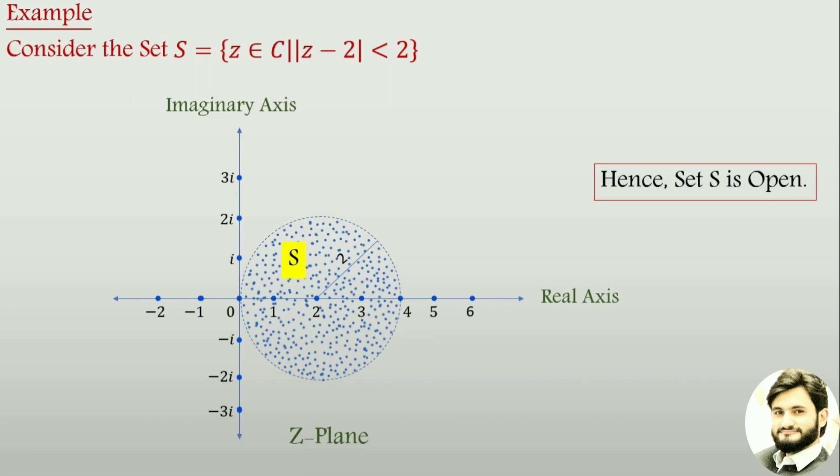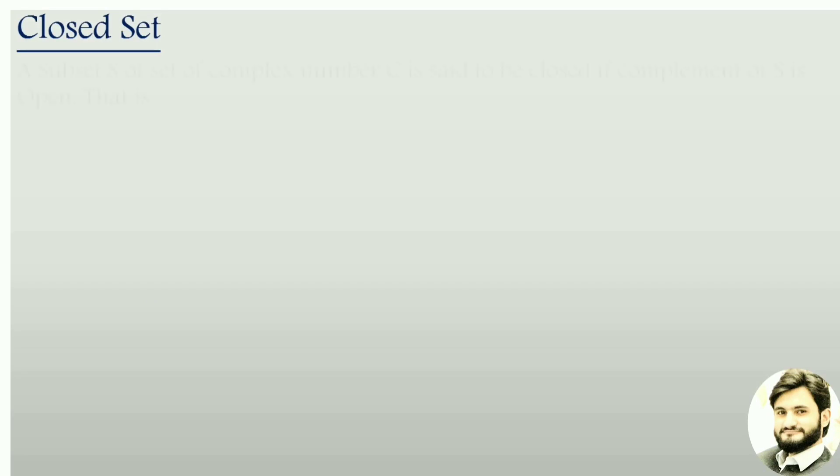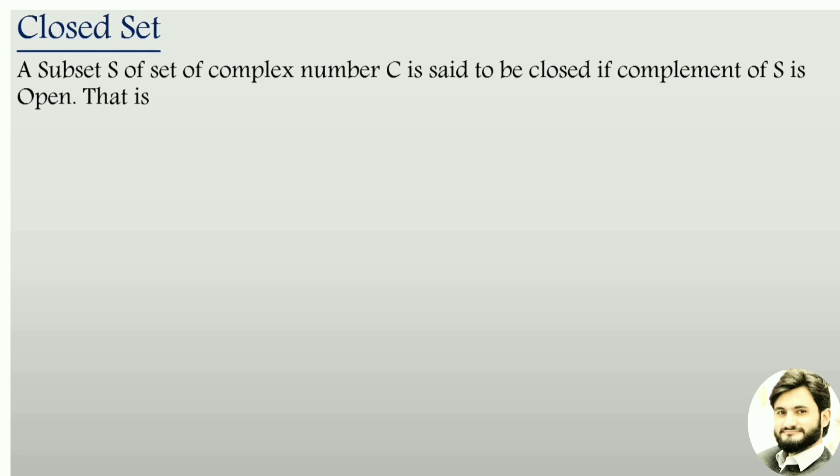Now closed set: a subset S of a set of complex numbers C is said to be closed set if the complement of S is open, that is S' = C - S, which contains all those complex numbers which are not in S, is open.